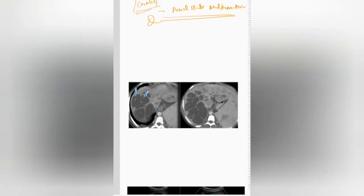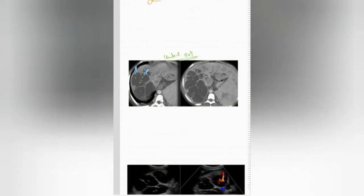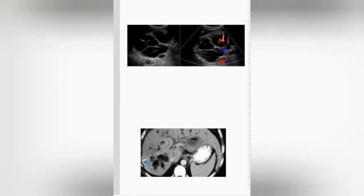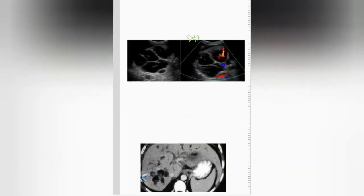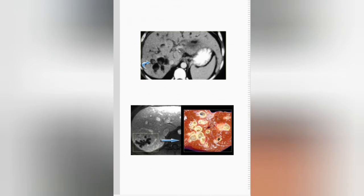This is your CT showing a central dot sign. What the central dot corresponds to is your portal radical. This is your Doppler study showing the flow in your portal vein.